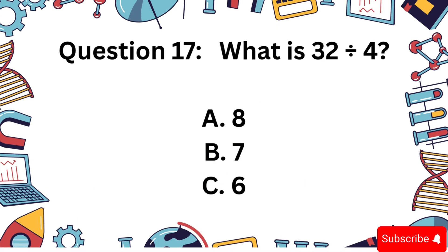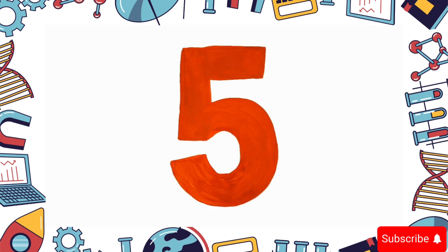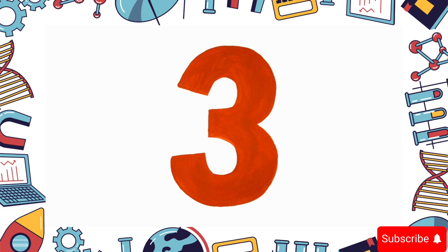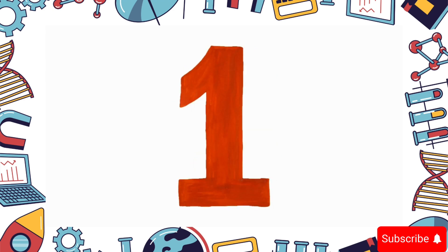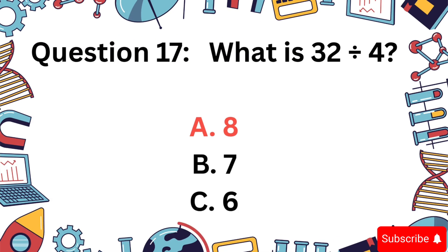32 divided by 4. A, 8, B, 7, or C, 6? Answer: A, 8.